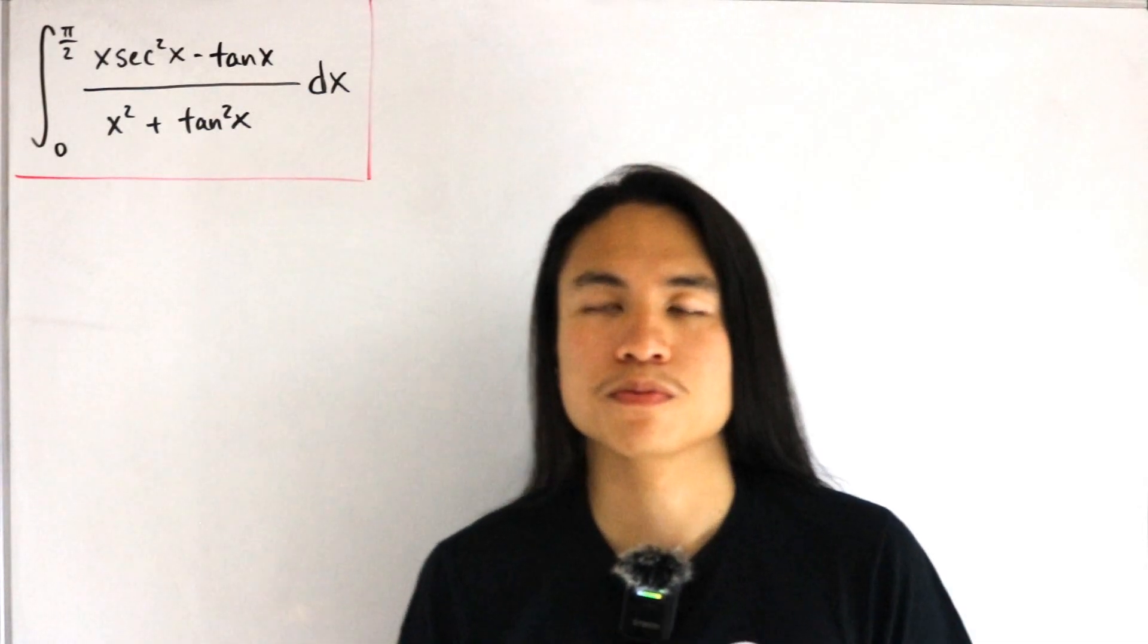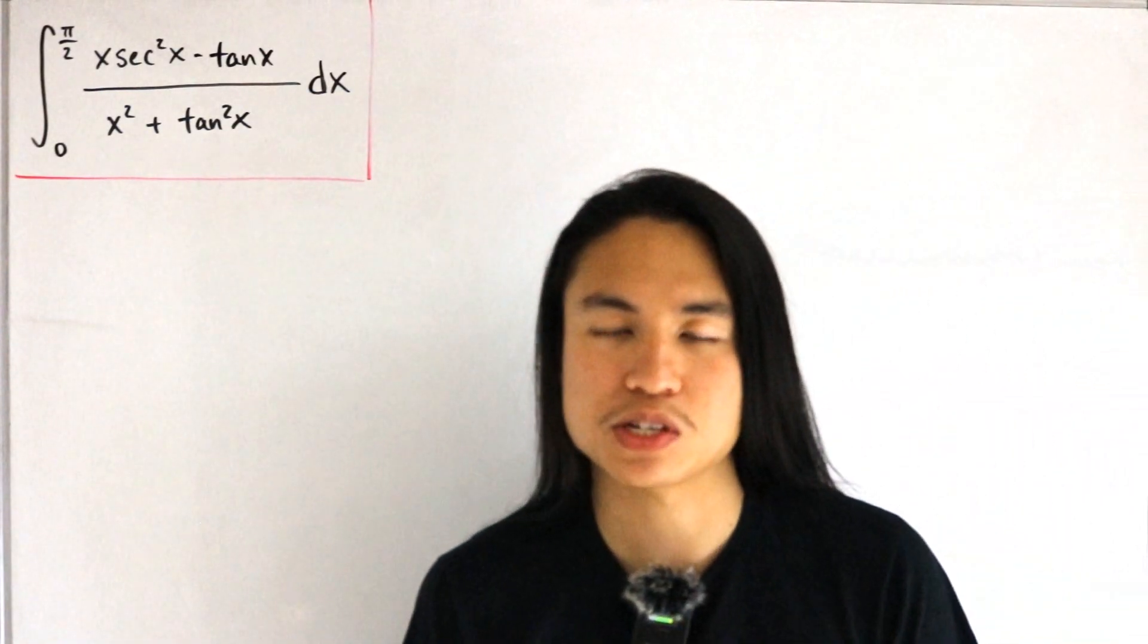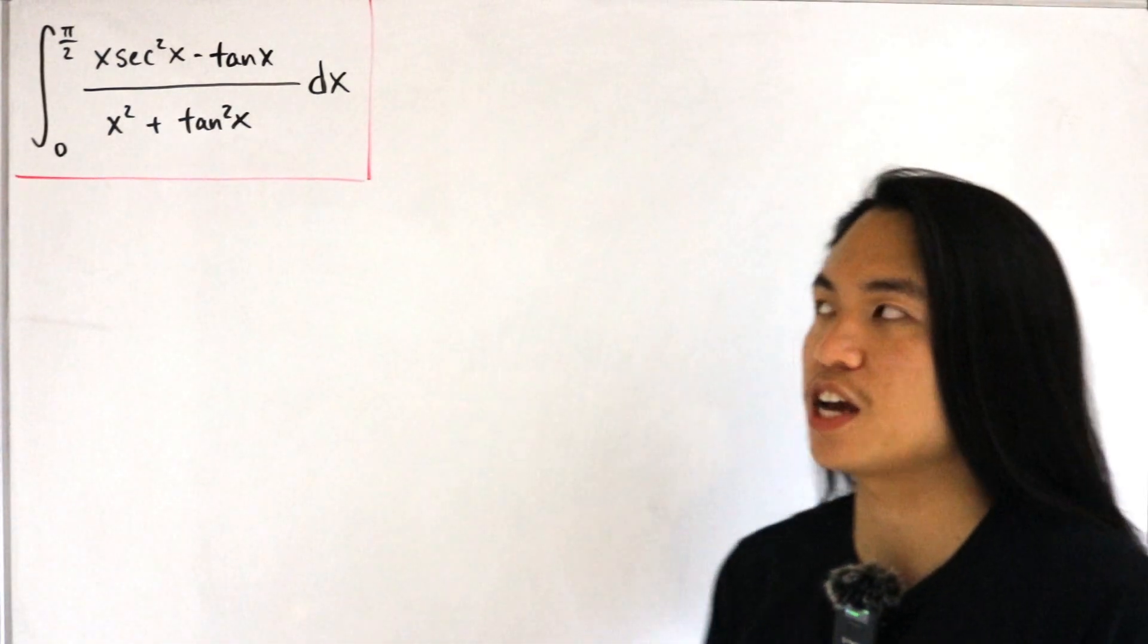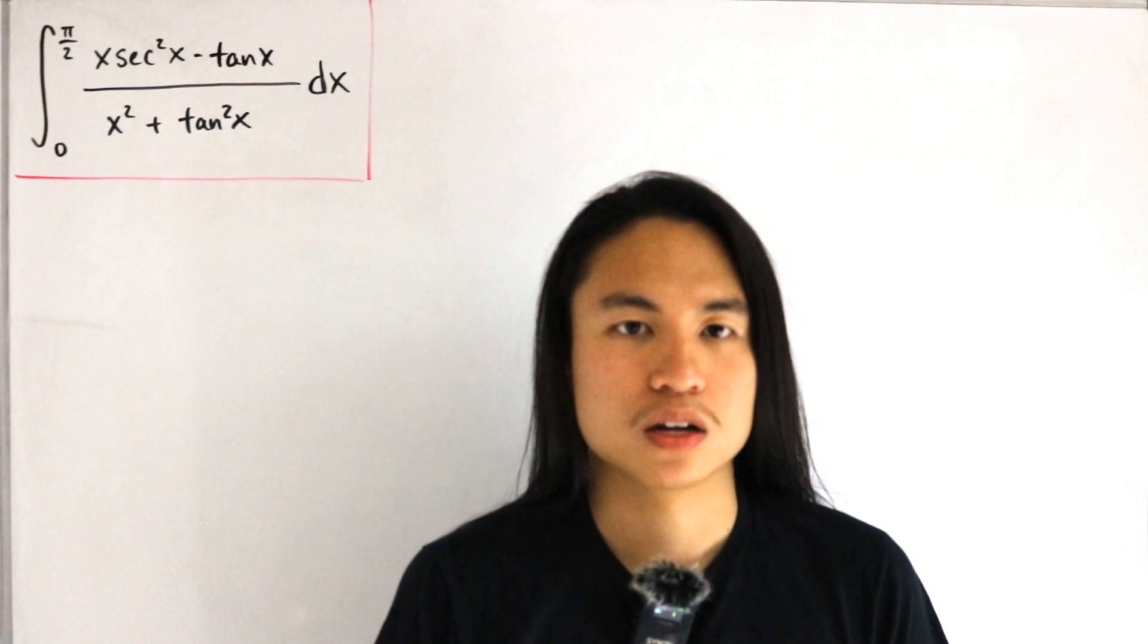Okay, so we'll go back to another video. Here we have the definite integral from zero to π/2 of x·sec²x - tan x divided by x² + tan²x dx.